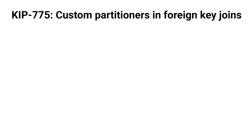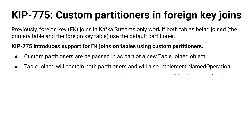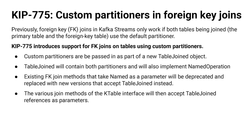Finally, KIP 775 allows you to use custom partitioners in your foreign key joins. Prior to this KIP, both the primary table and the foreign key table had to be partitioned using the default partitioner. To make this new functionality possible, the custom partitioners will be passed into a new TableJoined object, which extends NamedOperation. Note that any foreign key join methods that take in NamedOperation will be deprecated moving forward — they will instead take in the TableJoined object.